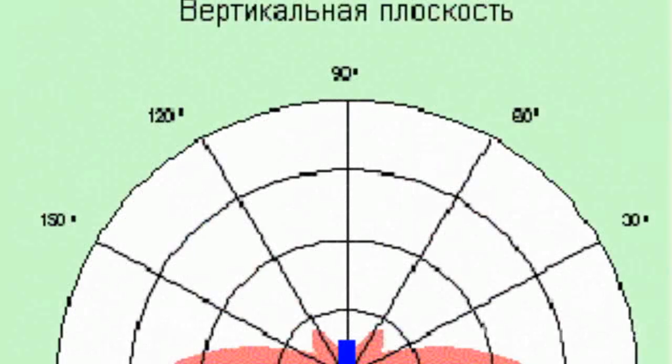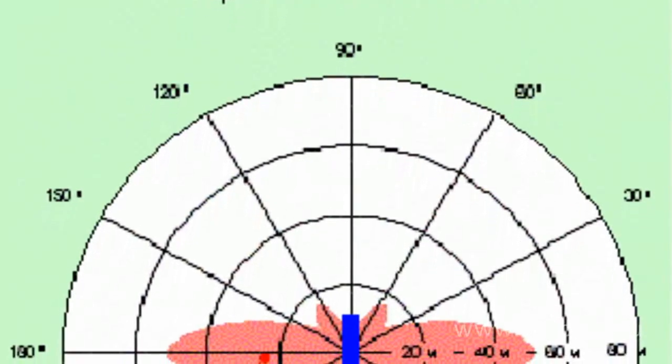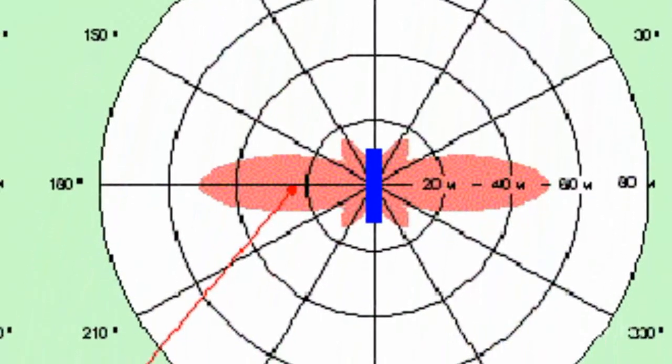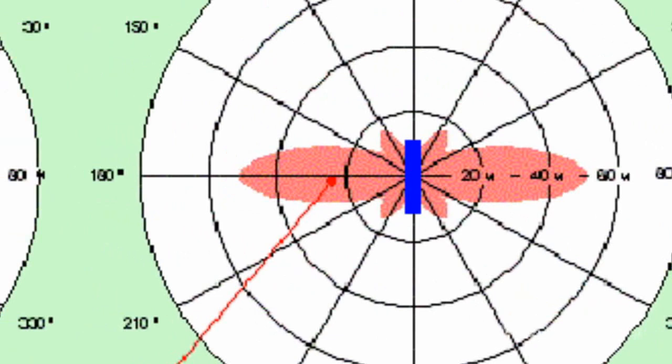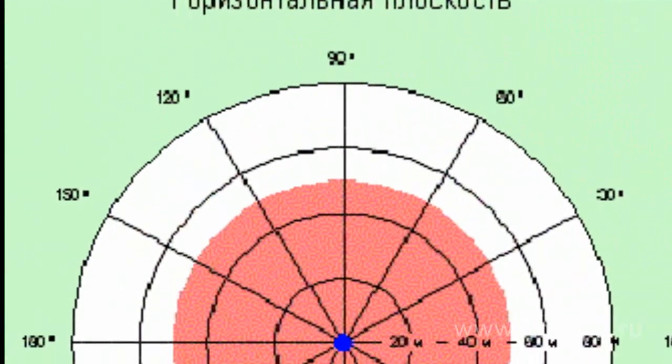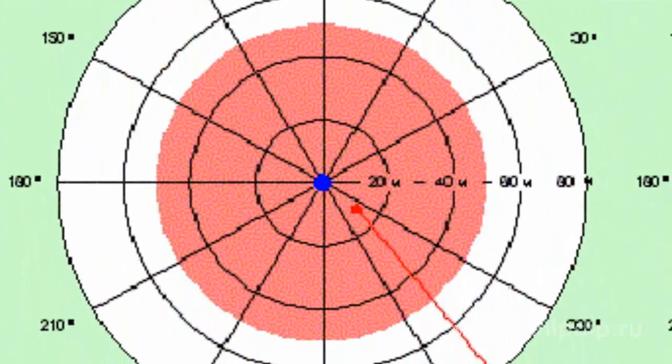Antenna directional diagrams may be vertical, meaning the angle of radiation relative to the horizon, and horizontal, meaning the intensity of the field radiated by the antenna relative to the antenna itself.